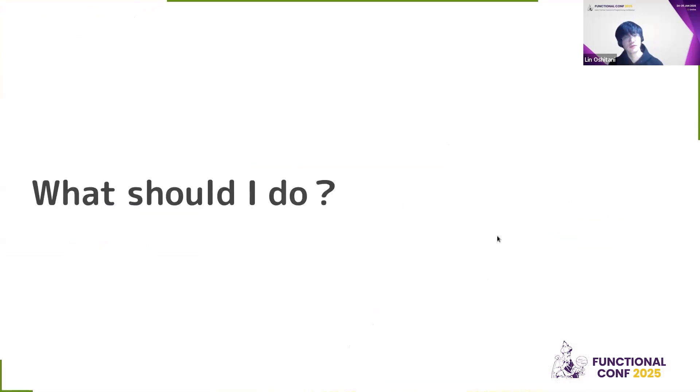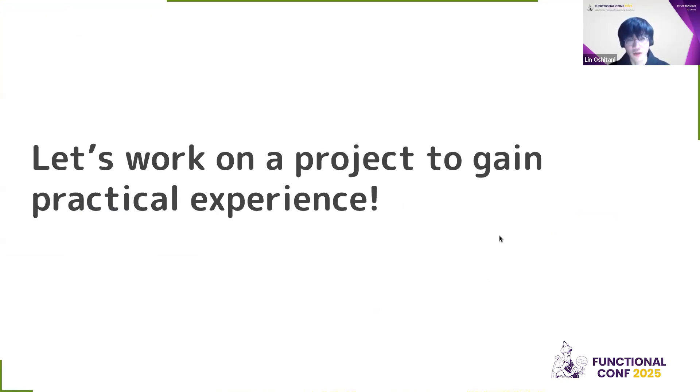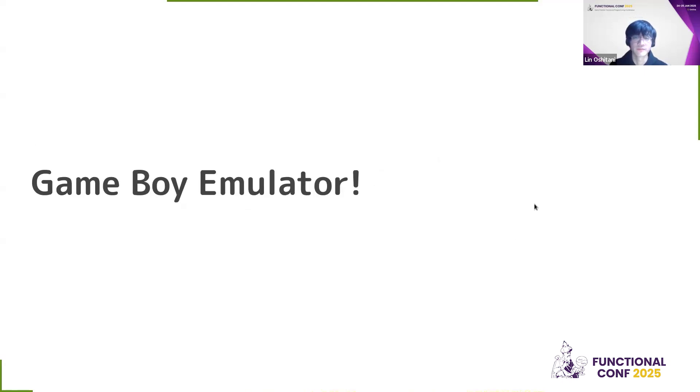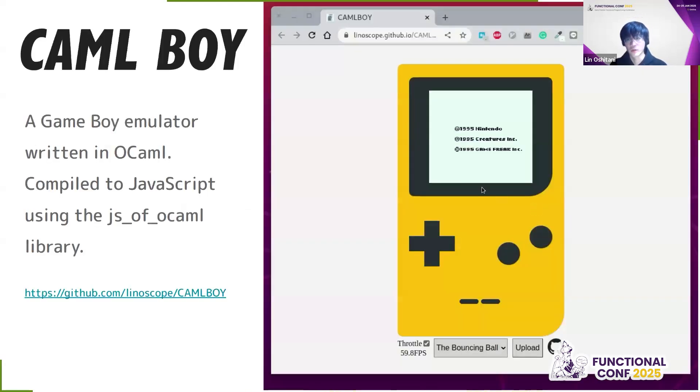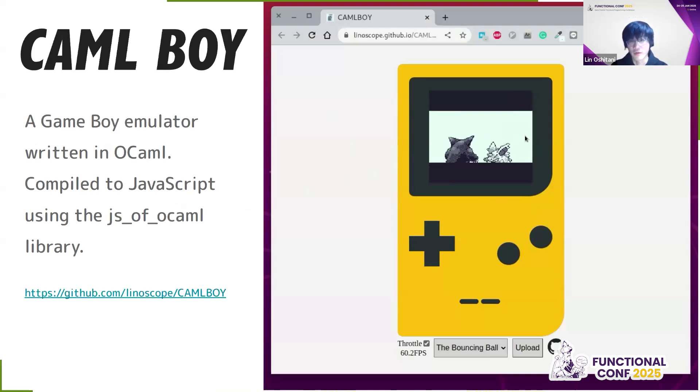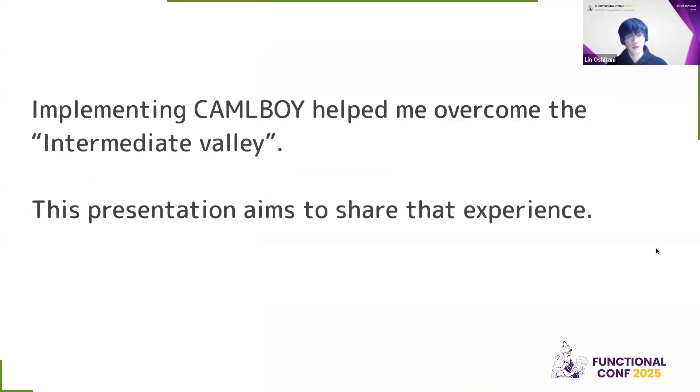So what should I do? I thought, okay, let's work on a project to gain practical experience. Let's write a Gameboy emulator. So this is what I wrote. It's called Camel Boy, and it is a Gameboy emulator written in OCaml. And it's compiled to JavaScript using JS of OCaml library. So it runs in the browser like this. And here is a plot story. Implementing Camel Boy helped me overcome the intermediate valley that I mentioned before. And this presentation aims to share that experience.